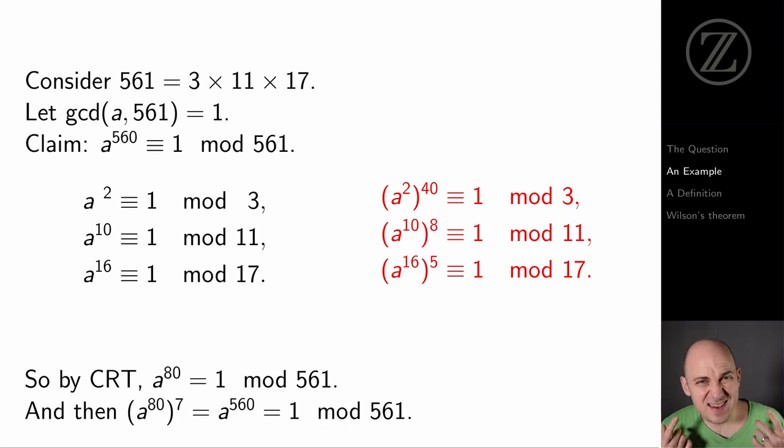Now I can do the same thing with the next congruence. I can take a to the 10th is congruent to 1 modulo 11 and raise both sides to the 8th power to conclude that a to the 80th power is congruent to 1 modulo 11. And finally, I can take that last congruence, a to the 16th is congruent to 1 modulo 17, and I can raise both sides to the 5th power in order to conclude that a to the 80th power is congruent to 1 modulo 17.